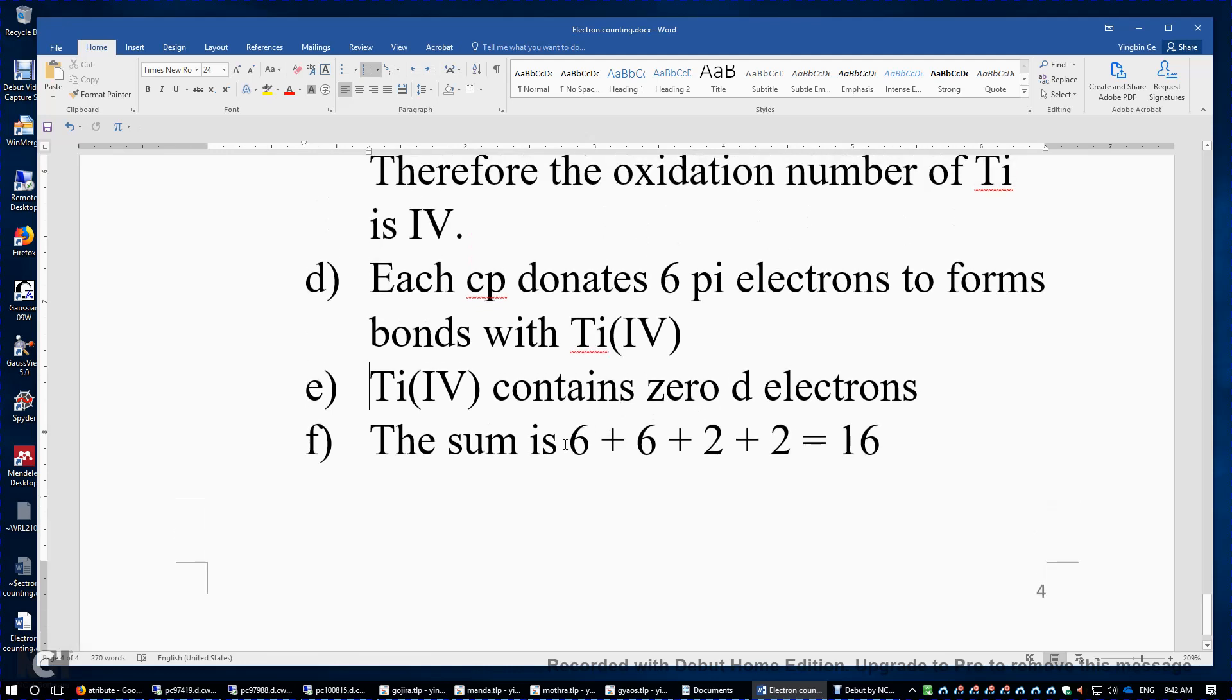Therefore, the sum is 6 electrons from the first cyclopentadienyl anion and 6 from the second cyclopentadienyl anion, and then 2 from 1 sulfur, another 2 from another sulfur. You sum it up, you have 16 valence electrons surrounding this titanium center.